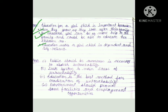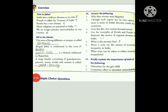The last question of this chapter is: conscious effort to abandon untouchability. There are four points. First: public awareness is necessary to abolish untouchability. Second: the caste system is the main cause of untouchability. Third: education is the best method for eradication of untouchability. Fourth: the government should provide facilities and employment opportunities. This completes the question and answer, true and false, and fill in the blanks. I hope it will help you. Thank you.